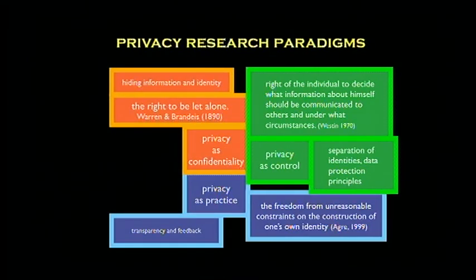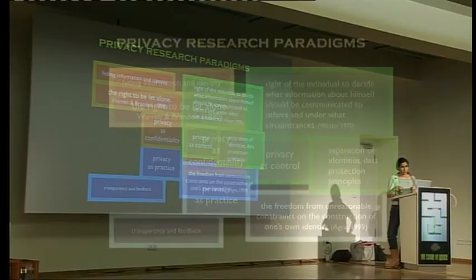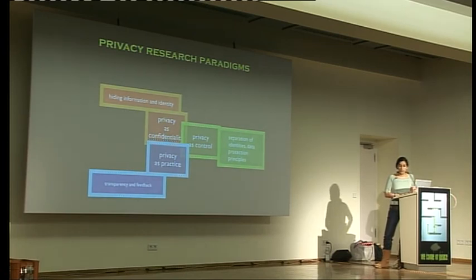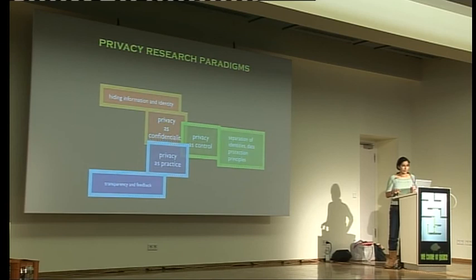The last paradigm, which is rather less known, is what I call privacy as practice. The definition I select is the freedom from unreasonable constraints on the construction of one's own identity — from AGRI 1999. I would also put Hildebrand's arguments here: we're not born with a specific identity, it's constantly in development as we come and interact with our environment and other people. Privacy is being able to do that. My basic argument is that none of these paradigms is the right or wrong paradigm — they actually work together really well, and they also have similar failures on some levels.